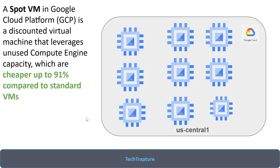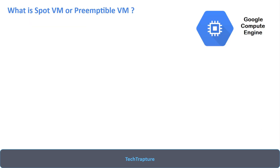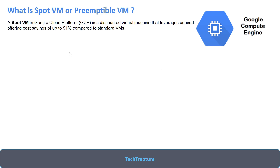Let's understand a few more details about Spot and preemptable VMs. Preemptable VMs and Spot VMs are almost similar — preemptable VM is the older version while Spot VM is the newer version with the same concept. The only difference is that preemptable VMs had a limitation that you could run them for a maximum of 24 hours, but Spot VMs do not have this limitation. These are up to 90–91% cheaper compared to standard VMs, making them very cost effective.